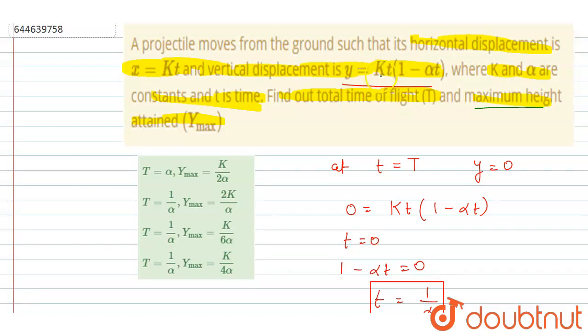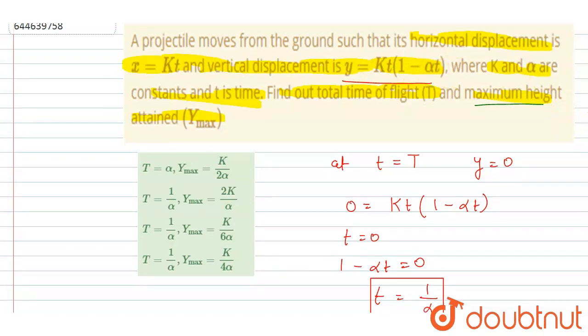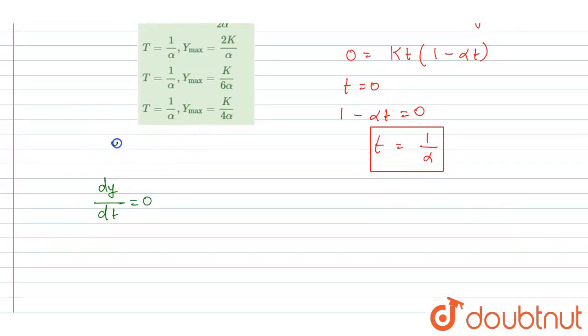dt. If you see here, this y = kt - kαt². So I will write y = kt - kαt². Differentiating it, I will write k - 2kα